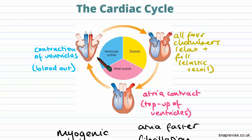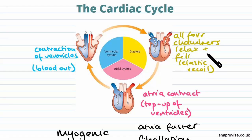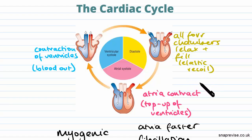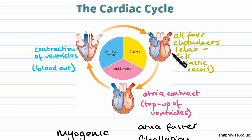From ventricular systole we move to diastole, which is where all four of the chambers in the heart relax and they fill. The reason they are allowed to fill is because of elastic recoil, which allows the chambers to increase in volume and return back to their original size.